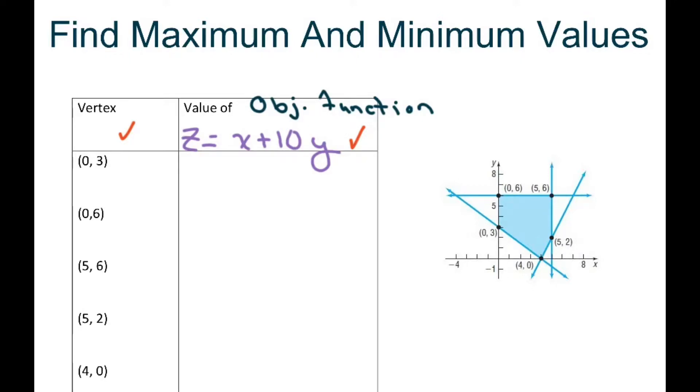So for the first one I'm going to plug in 0 and 3. So 0 plus 10 times 3 equals 30. Then I have z equals 0 plus 10 times 6 which equals 60. Then z equals 5 plus 10 times 6 which equals 65.